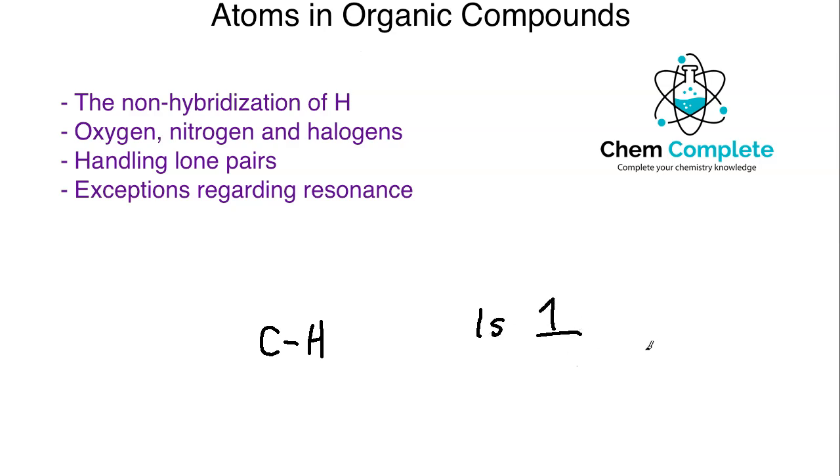Because it does not have access to any p orbitals, there's no such thing as a 1p orbital, the hydrogen does not have the ability to hybridize. Remember that a hybrid is two or more different types of orbitals that are coming together and undergoing this merging process during bonding. Because hydrogen only has access to the s orbitals, it cannot undergo that type of process.